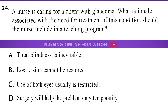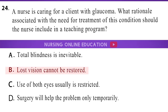Question 24: A nurse is caring for a client with glaucoma. What rationale associated with the need for treatment of this condition should the nurse include in a teaching program? A. Total blindness is inevitable. B. Lost vision cannot be restored. C. Use of both eyes usually is restricted. D. Surgery will help the problem only temporarily. The answer is option B: Lost vision cannot be restored.